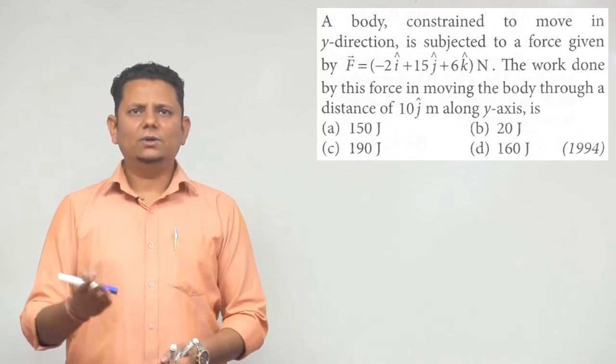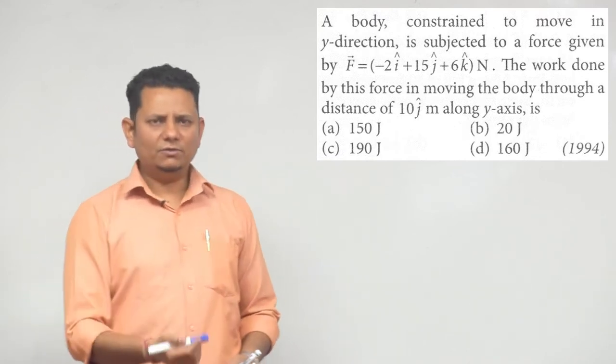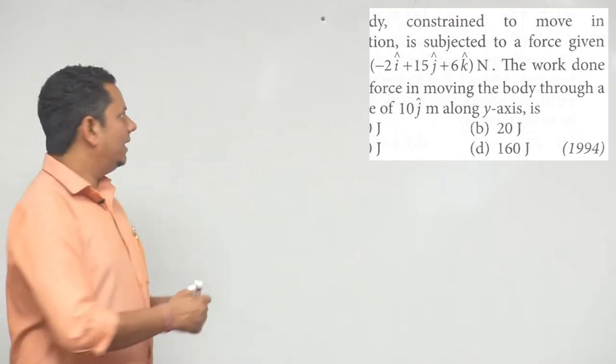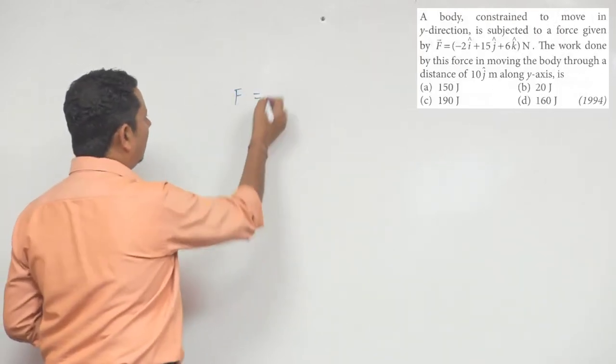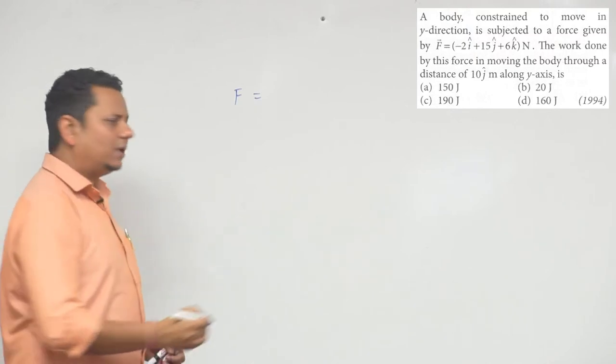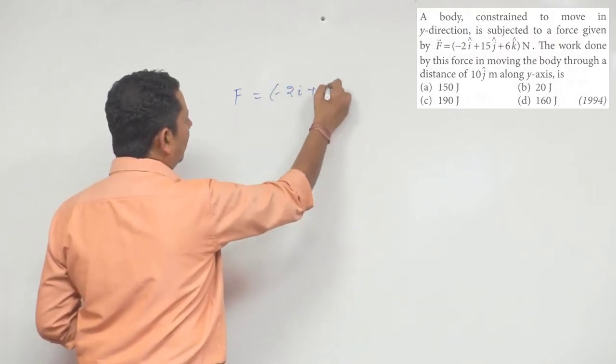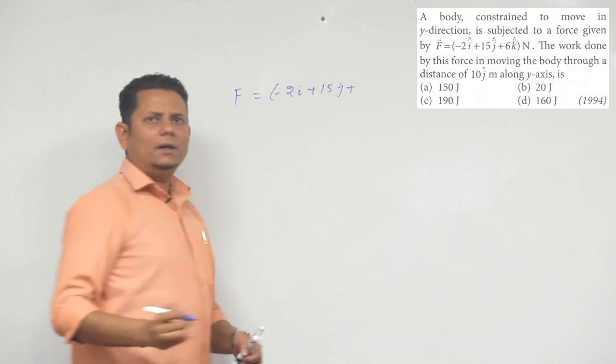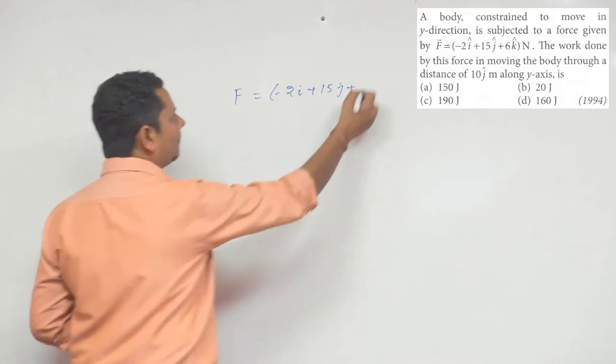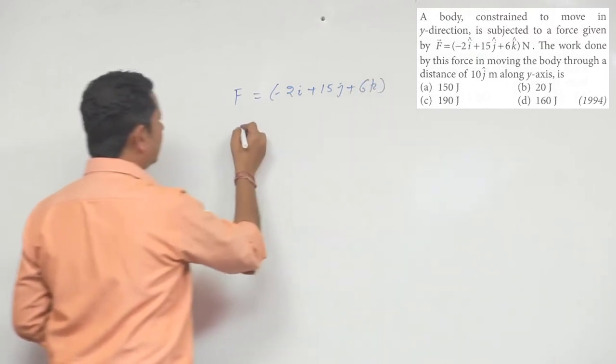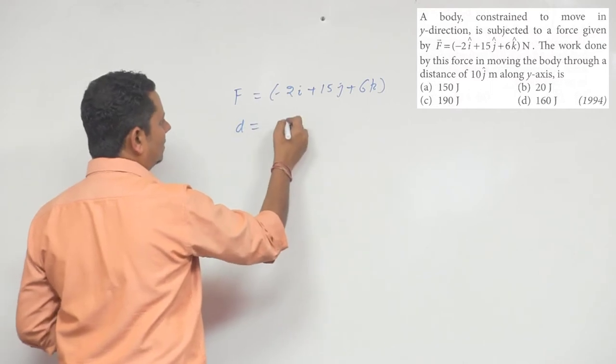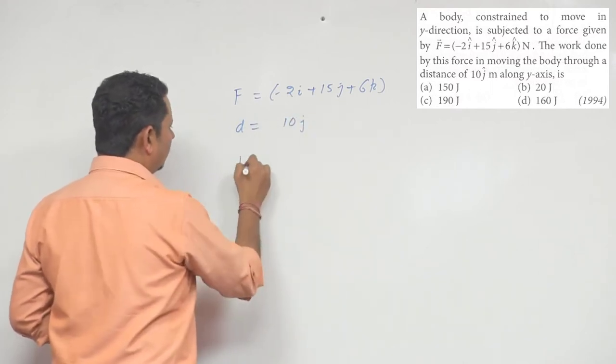Options are: 20 joule, 150 joule, 160 joule, 190 joule. Simple question. Here force is (-2i + 15j + 6k) and displacement d is 10j cap, so work done...